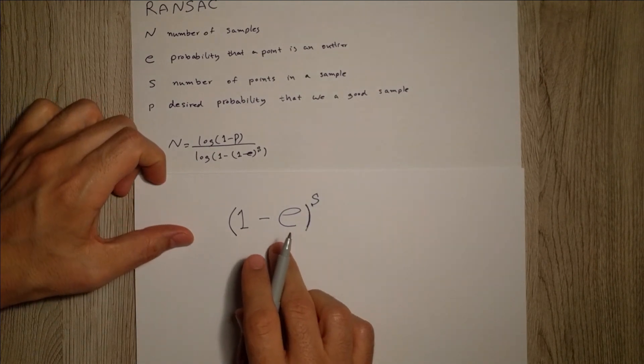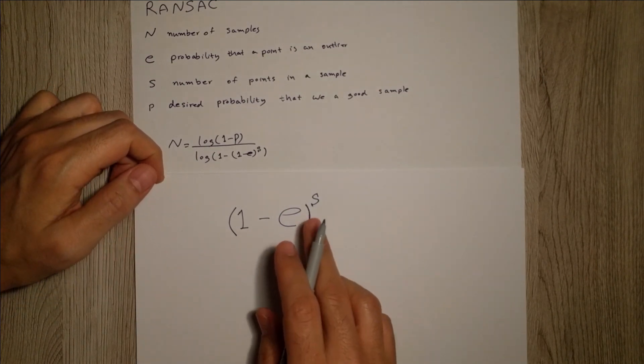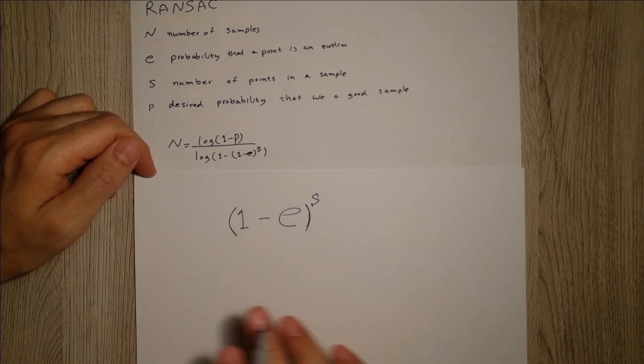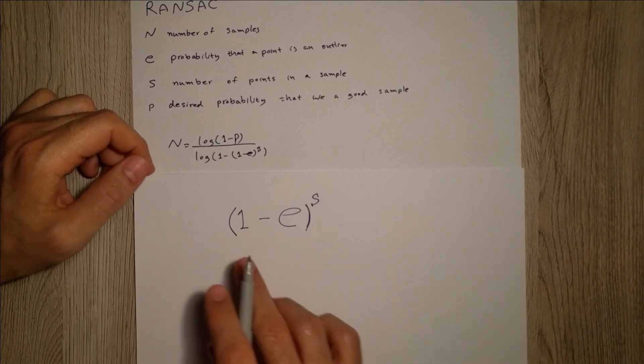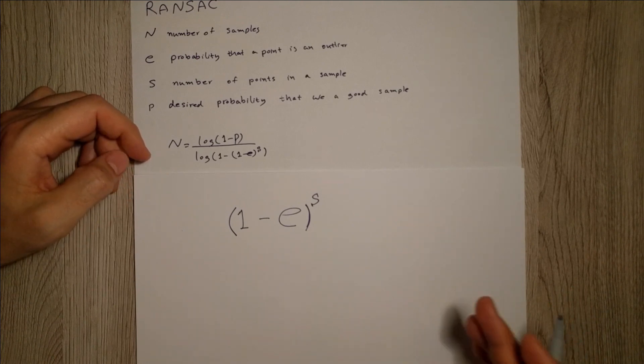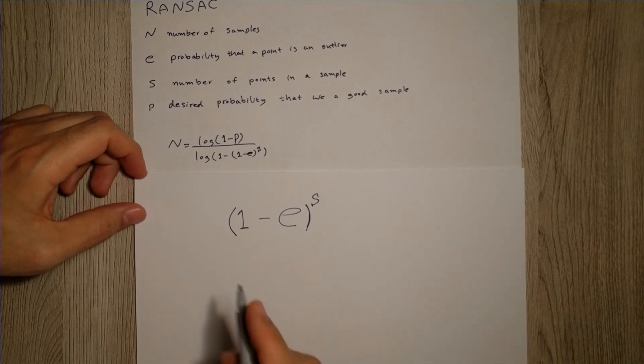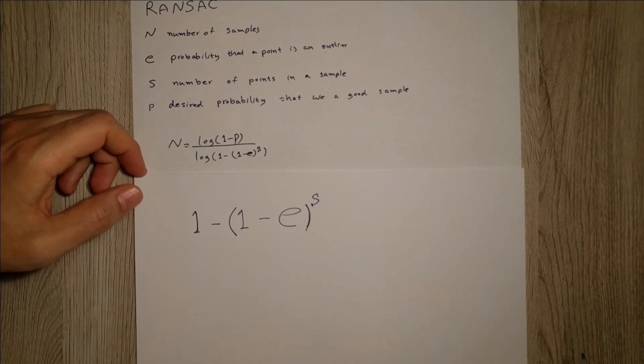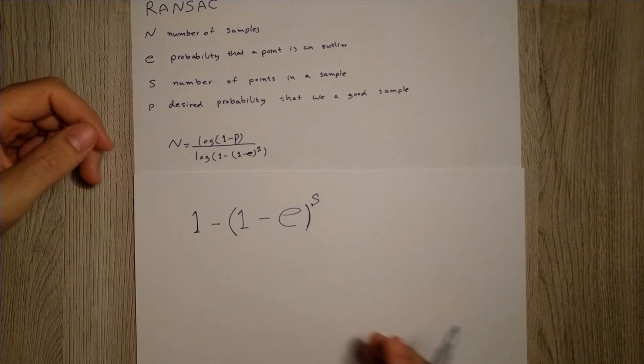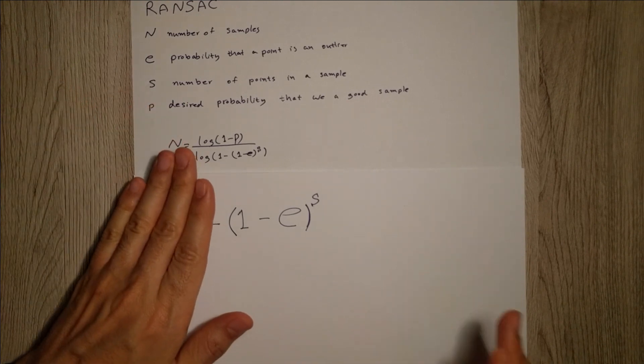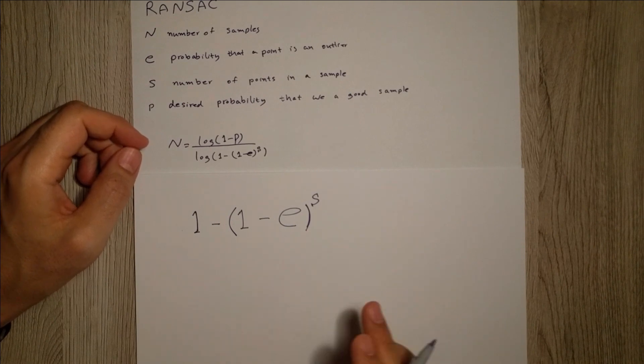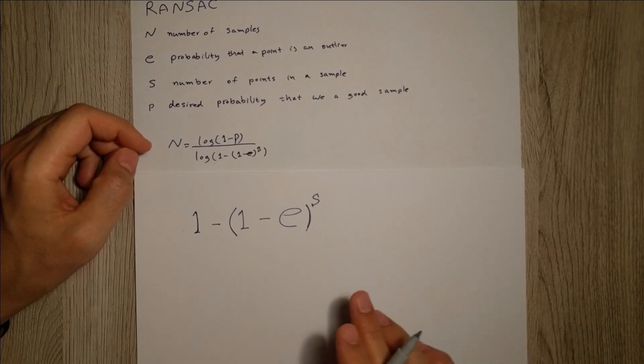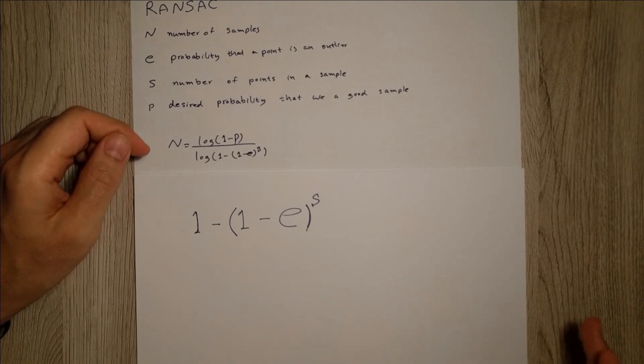The probability of choosing S points and all of them are inliers. What is the complement probability for that? One minus this. This was choosing S points that all of them are inliers. The complement probability is choosing S points and not all of them are inliers. That means at least there is one or maybe more outliers in our data.